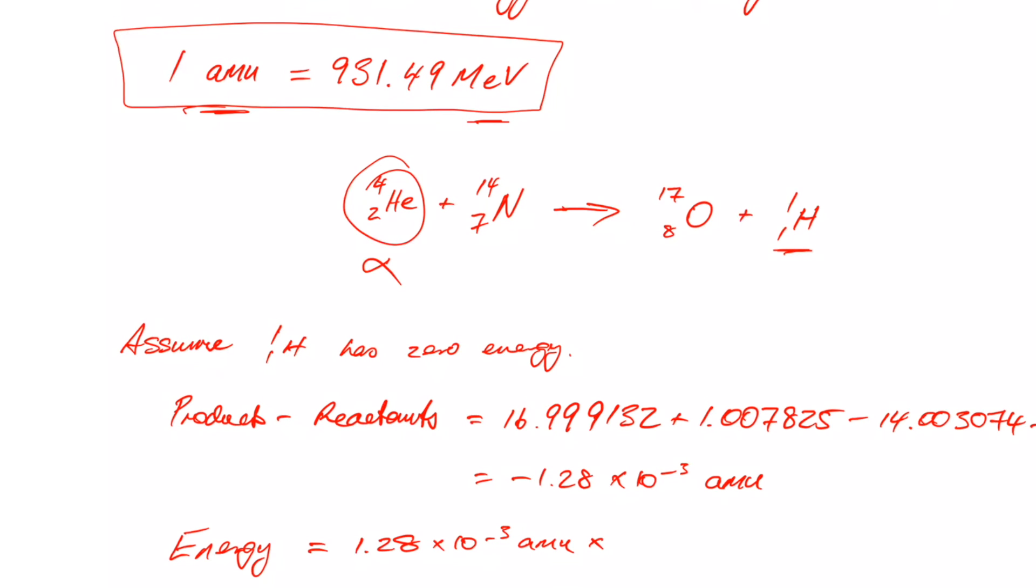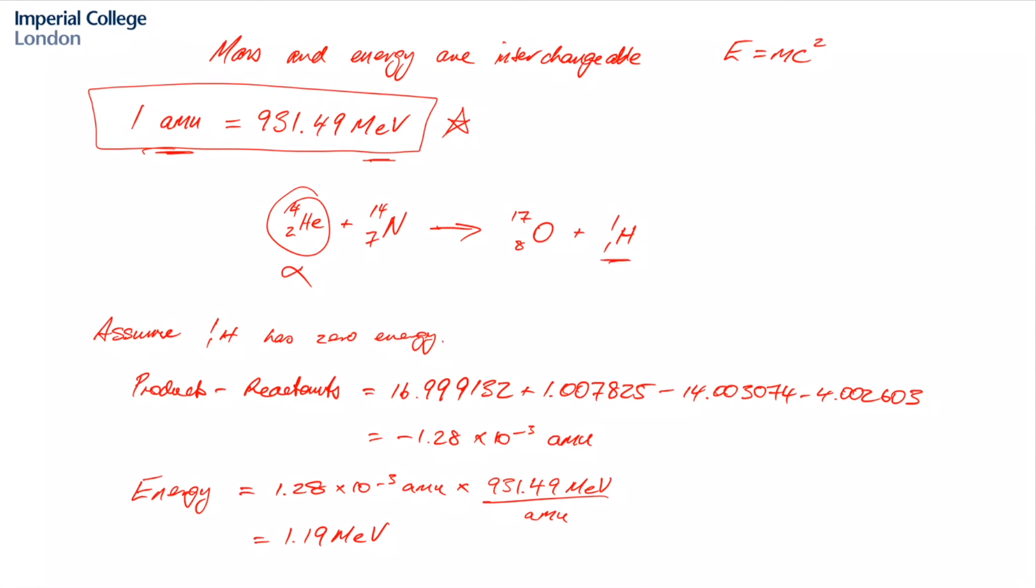And multiplied by that equivalence here, 931.49 mega electron volts per atomic mass unit. And so the answer is 1.19 mega electron volts. That's the answer for question 3.